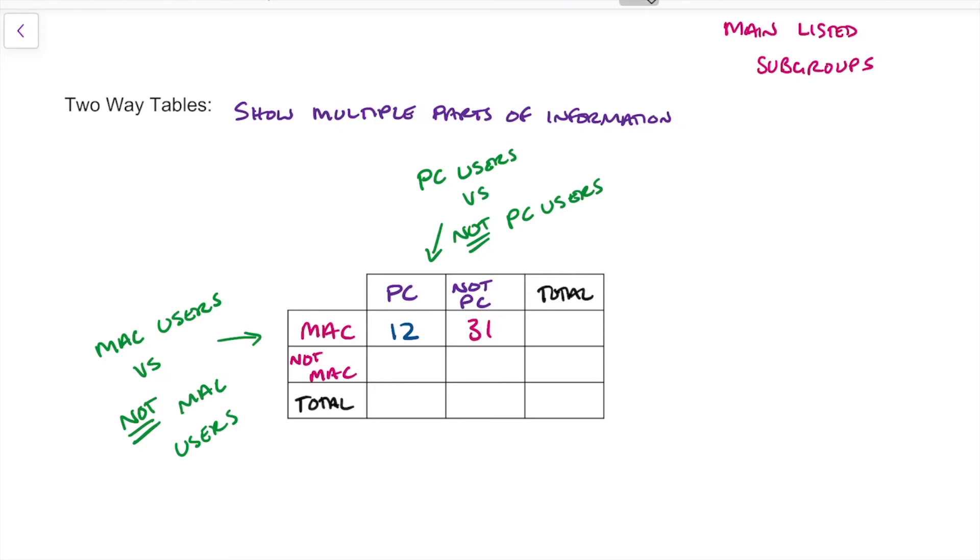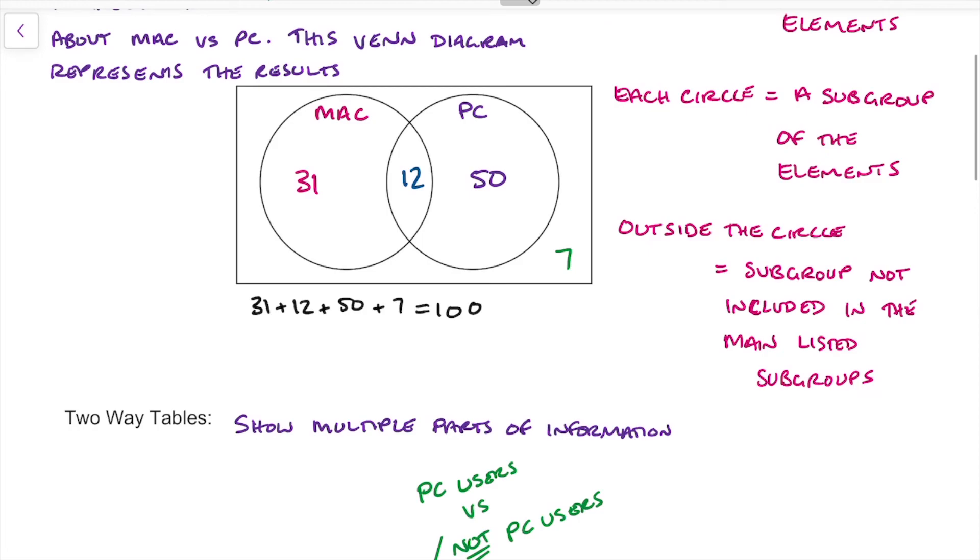PC users who don't use Macs, there's 50 of those. And how many were left over? Well, that was 7. So there's all our numbers from the previous one.